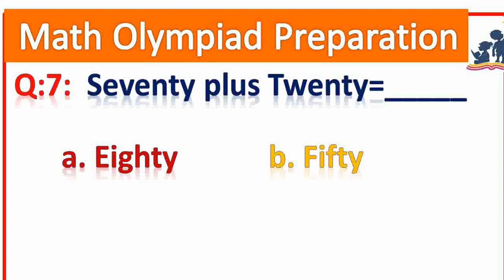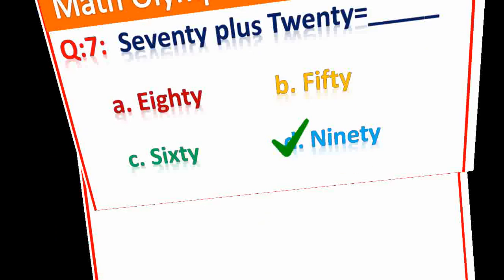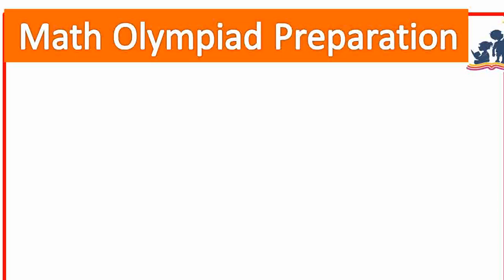Question number 7. 70 plus 20 is 90. Right answer. Very good.